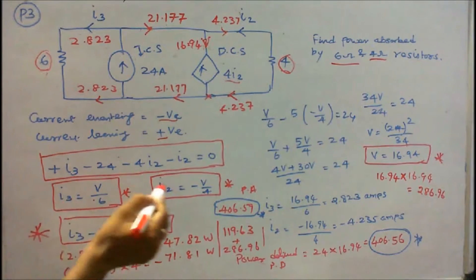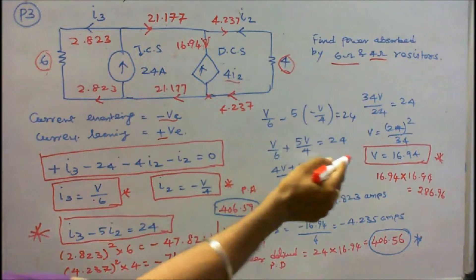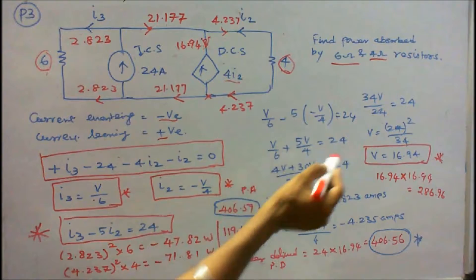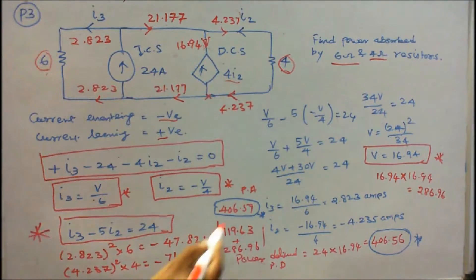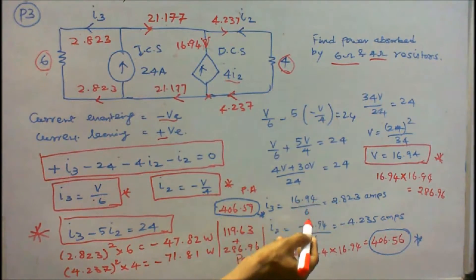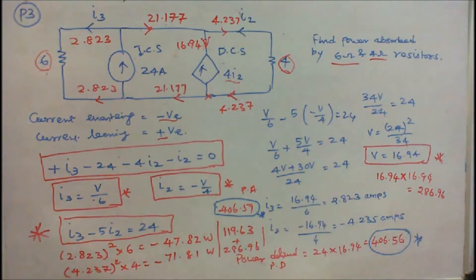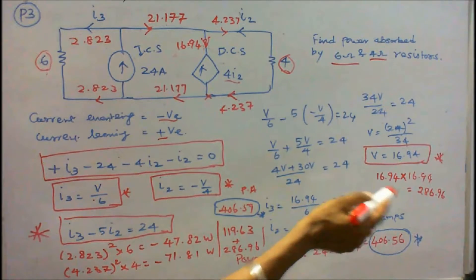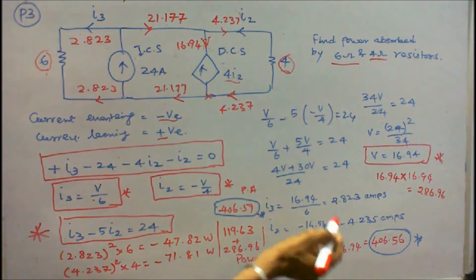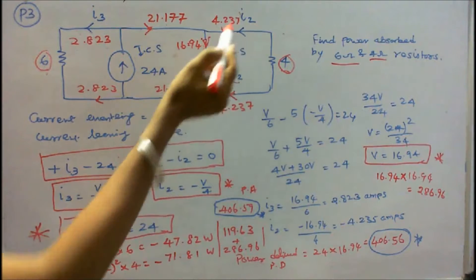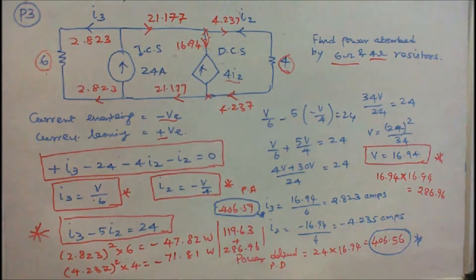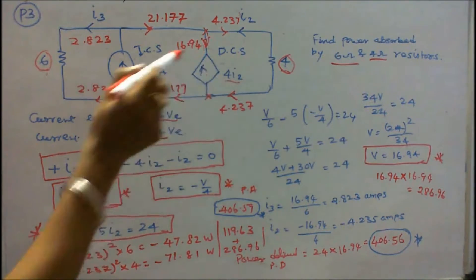Substituting I3 and I2 into the equation, I find V = 16.94 volts. Therefore: I3 = 16.94 / 6 = 2.823 amps, and I2 = -16.94 / 4 = -4.235 amps. The negative sign indicates the current direction is reversed from the assumed direction, so the dependent current source acts as a load.